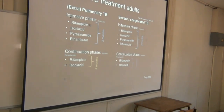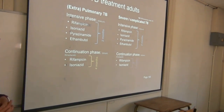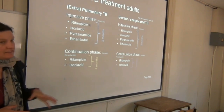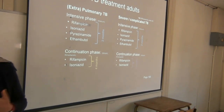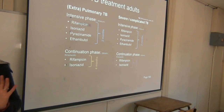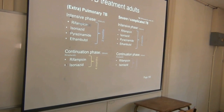For first-line TB treatment: normal pulmonary TB has an intensive phase of two months with all four drugs. Do a sputum at seven weeks. If smear-negative, change to continuation phase. If still smear-positive, continue the intensive phase for another month and do a follow-up sputum. The intensive phase is two months; the continuation phase is four months — that's for simple TB.